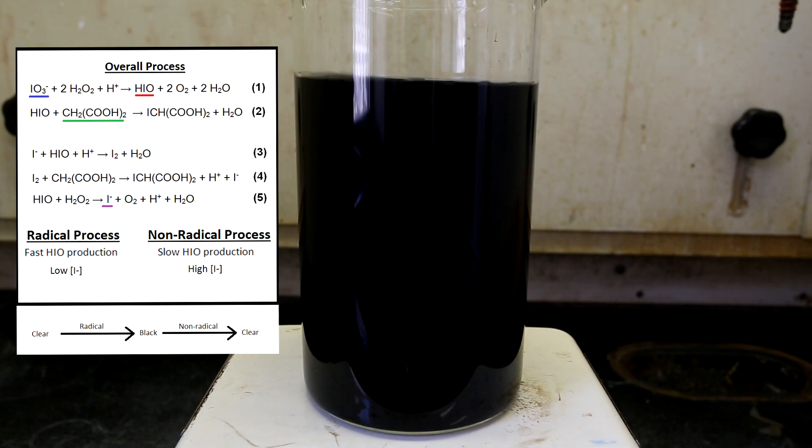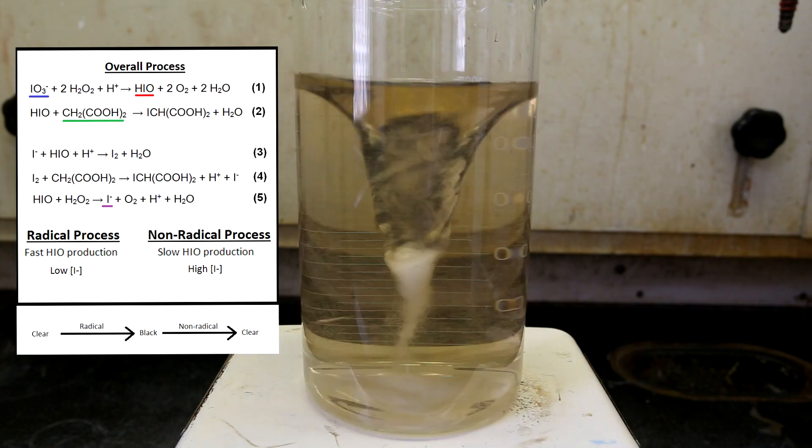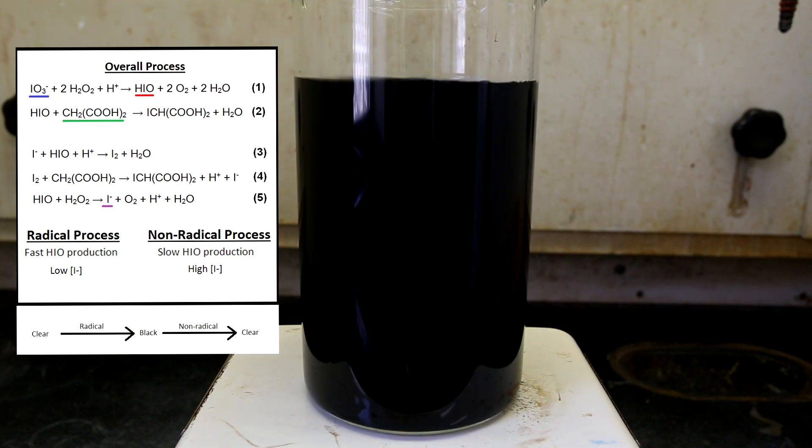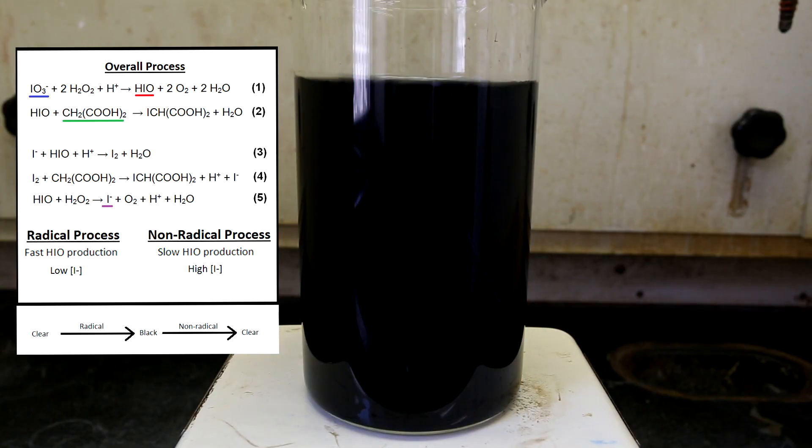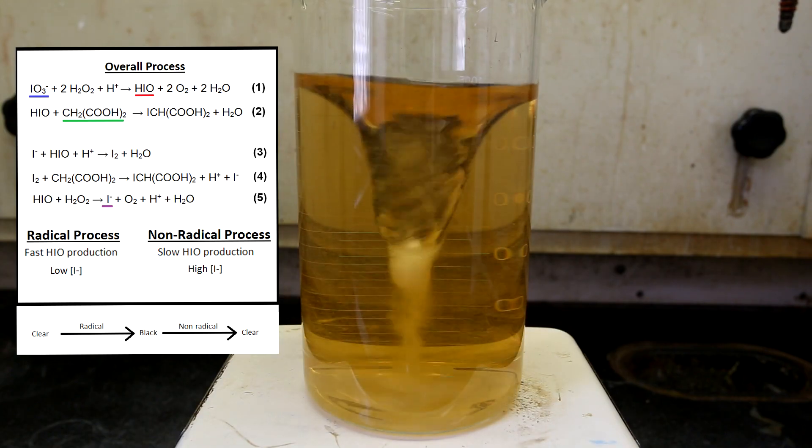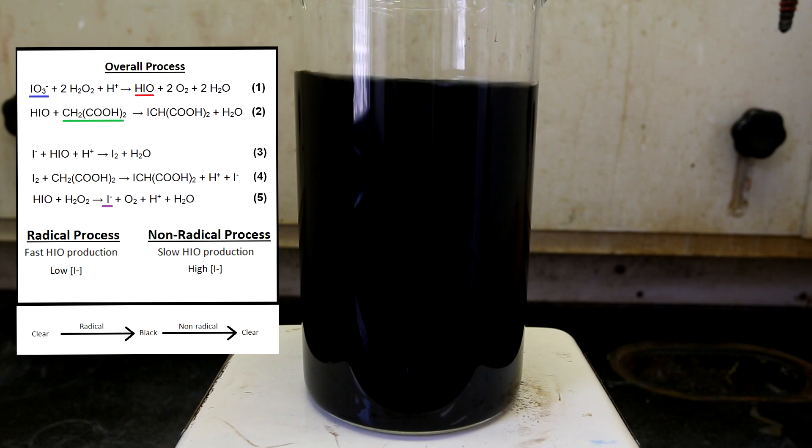There are a couple major characteristics about each process. Firstly, the radical process produces hypoiodous acid very quickly, but it functions at low iodide concentrations. On the other hand, the non-radical process produces the hypoiodous acid at a much slower rate, and it functions at high iodide concentrations. For the purpose of this explanation, the beginning of the cycle will be referred to when the solution is clear. When the solution is clear, this means that there is very low iodine or iodide present in the solution, and the radical process will dominate.